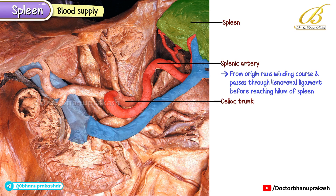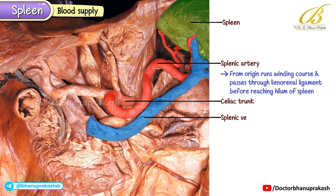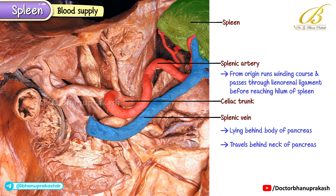The venous drainage follows a different but equally important route. The splenic vein runs almost straight from left to right, lying behind the body of the pancreas. As it travels behind the neck of the pancreas, it joins with the superior mesenteric vein, and together they form the portal vein, which then carries blood to the liver.